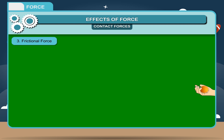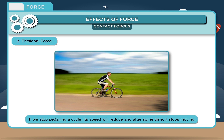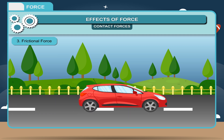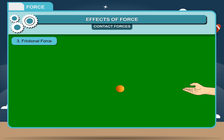Frictional force: Roll a rubber ball on the ground — after some time, the ball stops. Similarly, if we stop pedaling a cycle, its speed reduces and after some time it stops moving. A moving bicycle stops after some time because an opposite force from the ground acts on it. The rolling rubber ball also stops because a force acts on it in the opposite direction of its motion. This opposing force is called frictional force, and it tries to stop moving objects.